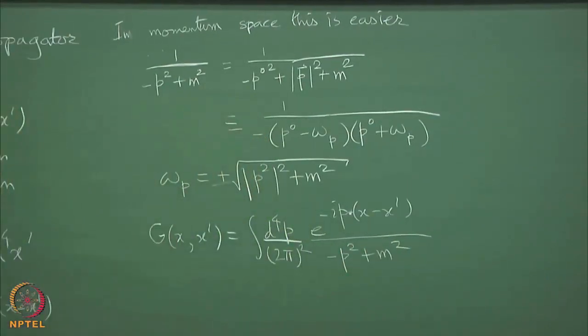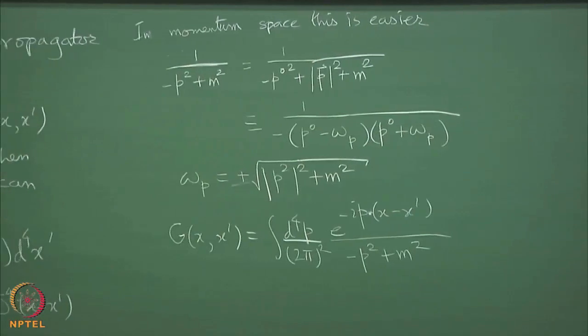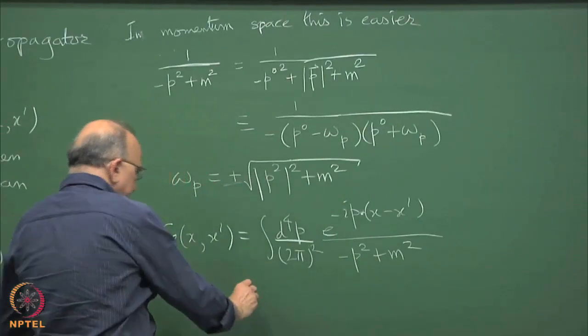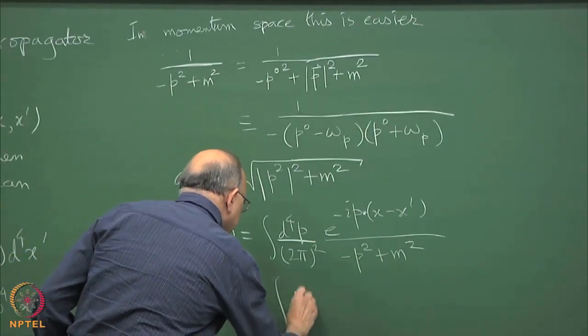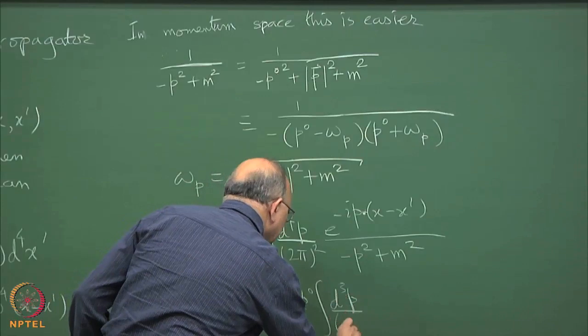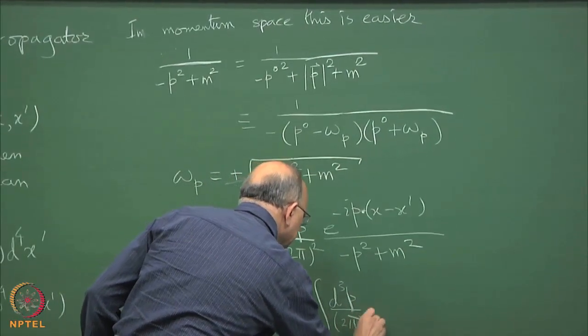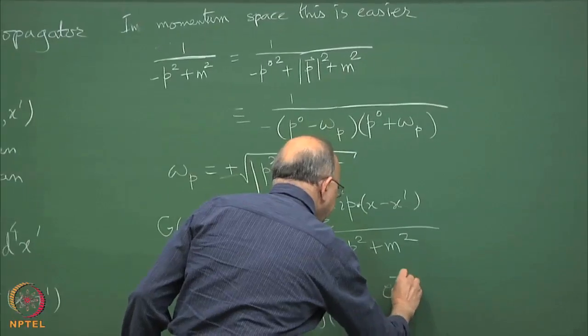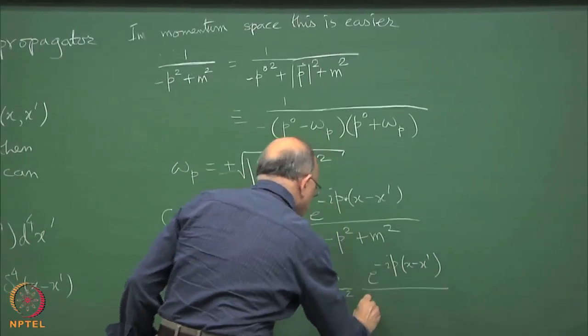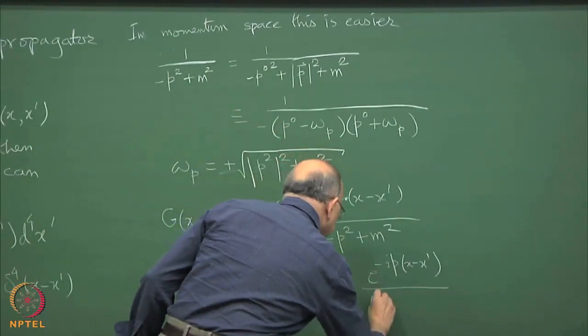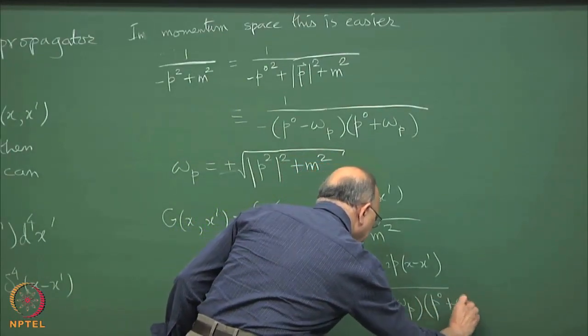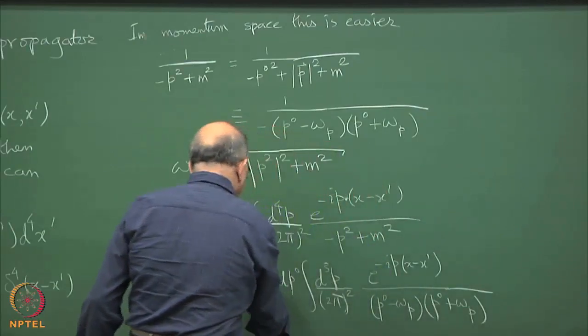Now there are these 2 poles in this and the answer for G is the Fourier inverse transform of this. There's 2 pi to the fourth in Ramond's notation, and e to the minus i p mu, so it is p dot x minus x prime for the Minkowski inner product, times this minus p square plus m square. This is the formal Green's function.